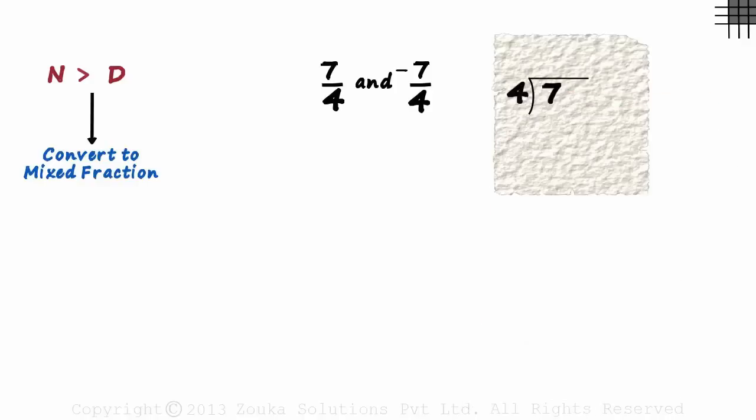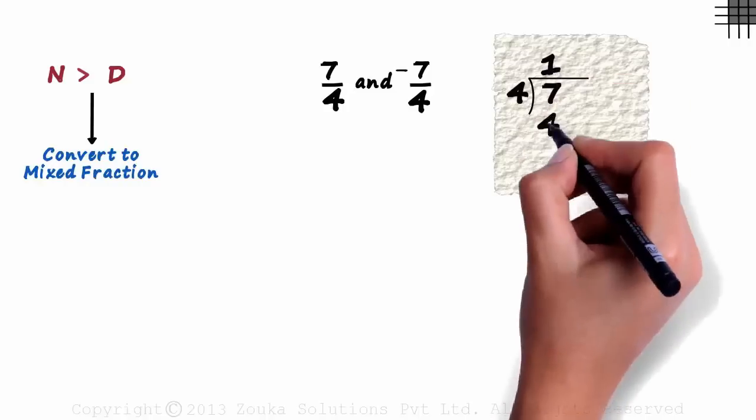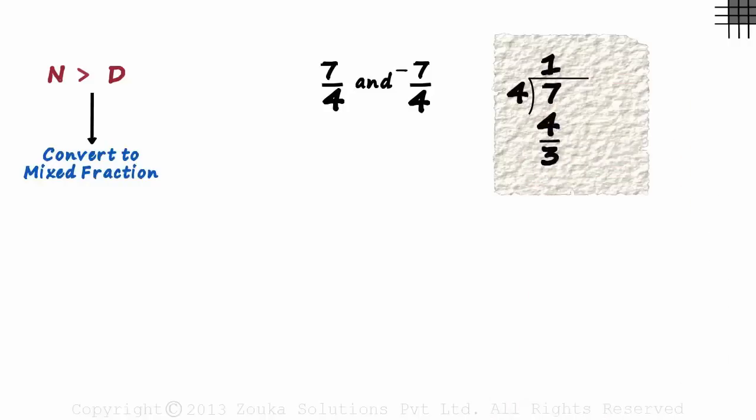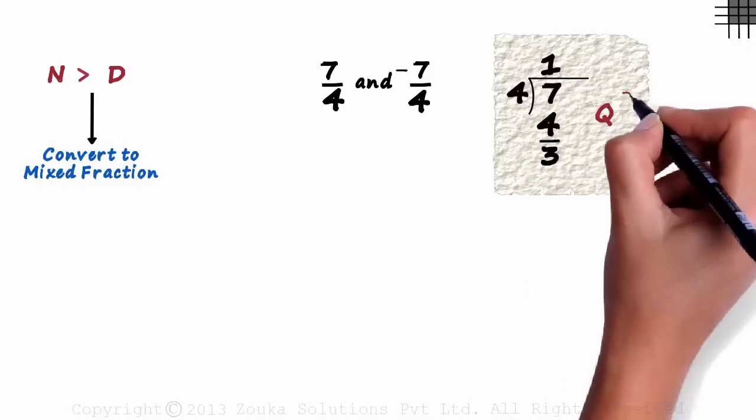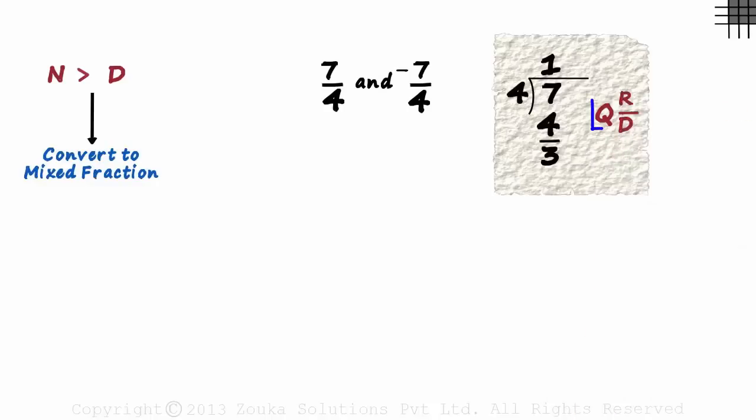We get the quotient as 1 and the remainder as 3. So we write the mixed fraction as quotient remainder by divisor. This is the whole part and this is the fractional part.